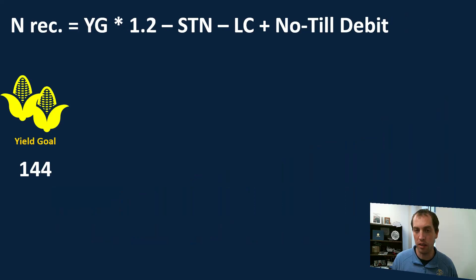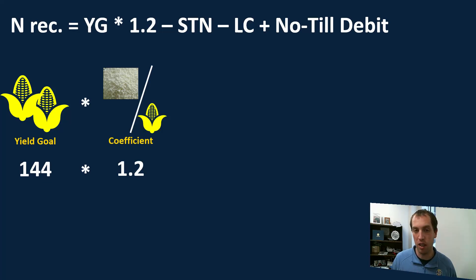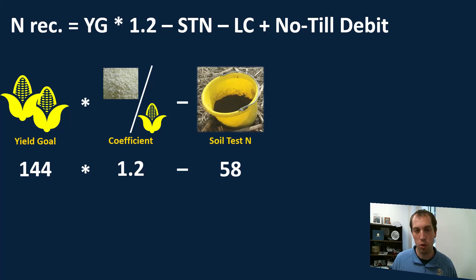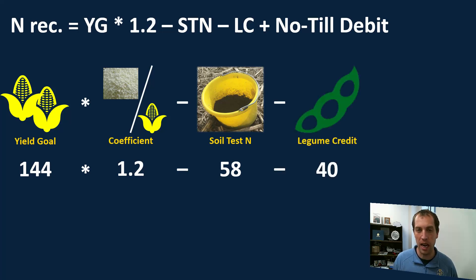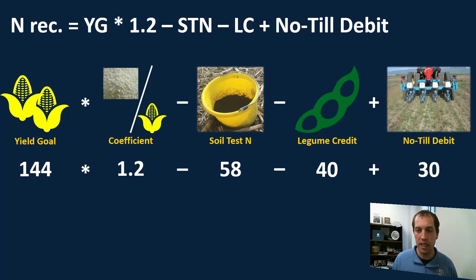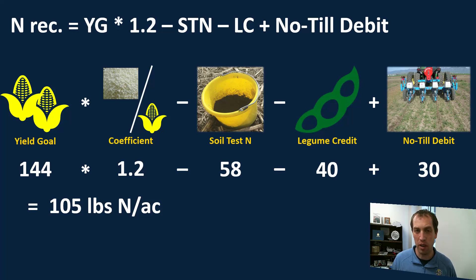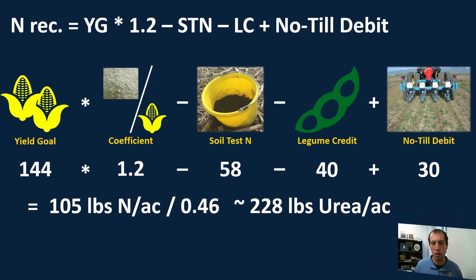We have our yield goal — say 144 bushels per acre in this example — multiplied by our coefficient or multiplier of 1.2 pounds of N per bushel of corn. We then subtract our soil test nitrogen from the 0–24 inch sample, subtract any legume credit if our previous crop was soybean or alfalfa, and if we're recently in no-till — within about five years — we add an extra 30 pounds of N. In this example, our nitrogen rate requirement comes out to about 105 pounds of nitrogen per acre, which divided by 46% (the nitrogen content of urea) gives us about 220 pounds of urea per acre.